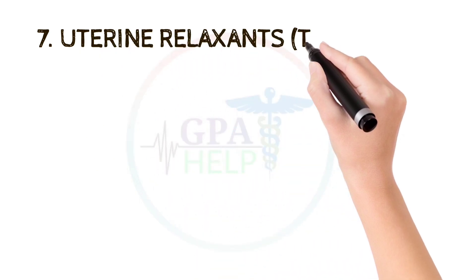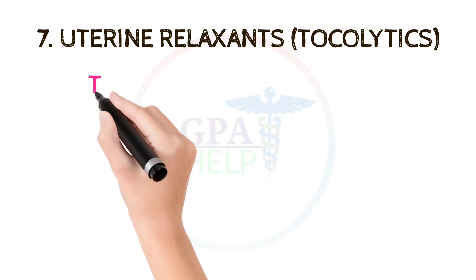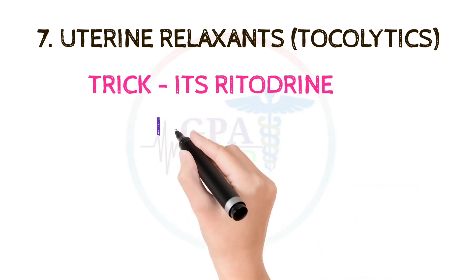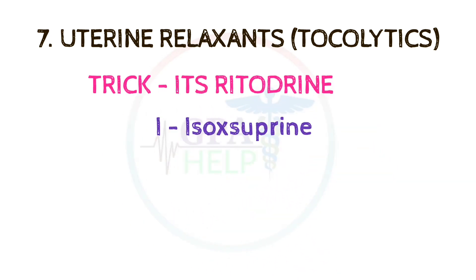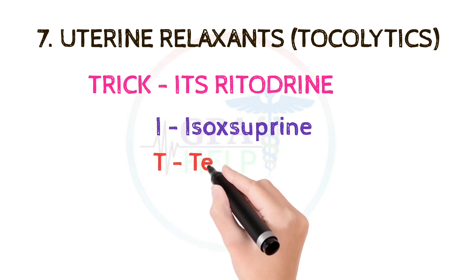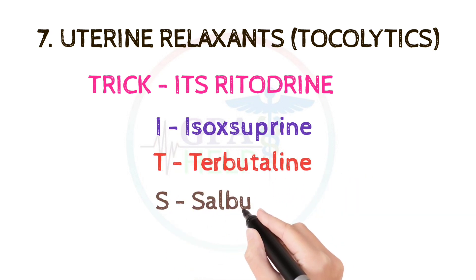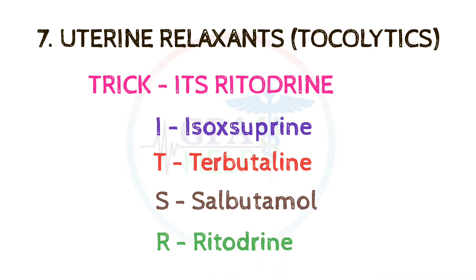The seventh and last class is uterine relaxants, which are also called tocolytics. These drugs can be learned by the trick: ITSR (it's ritodrine). I stands for isoxuprine, T stands for terbutaline, S stands for salbutamol, and R stands for ritodrine.